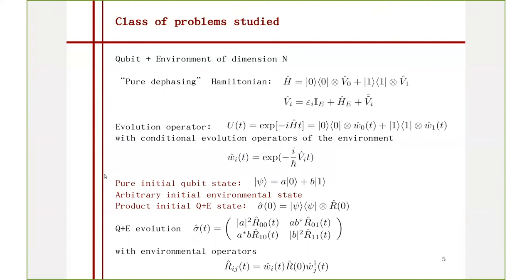These W operators can be anything — we do not need to specify what is happening on the environment. There's one more thing which is important: I need the initial qubit state to be pure. Once the initial qubit state is not pure, this whole thing becomes a complete mess, and I'm sort of halfway to solving it for the last four years or so. Can I ask something — can you allow in this framework a time-dependent Hamiltonian? I never tried, but there actually is no reason why not. So yes, I believe so.